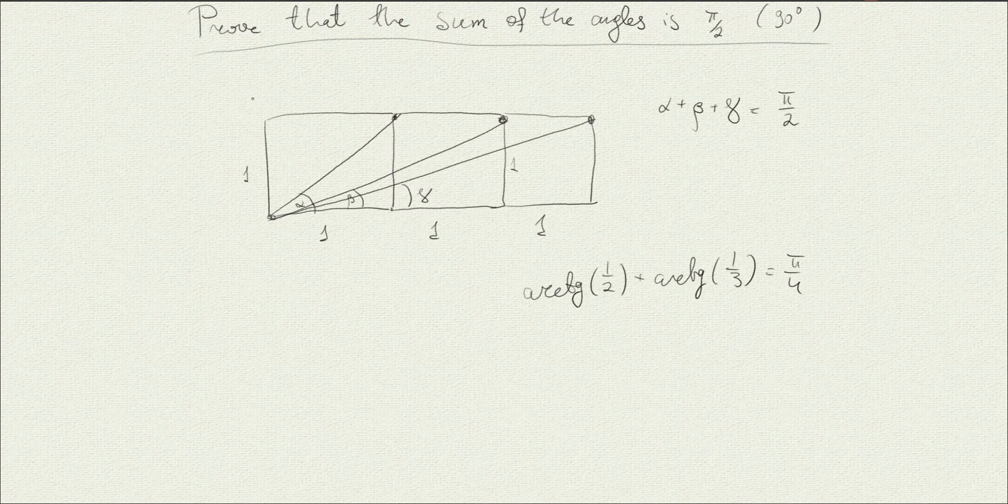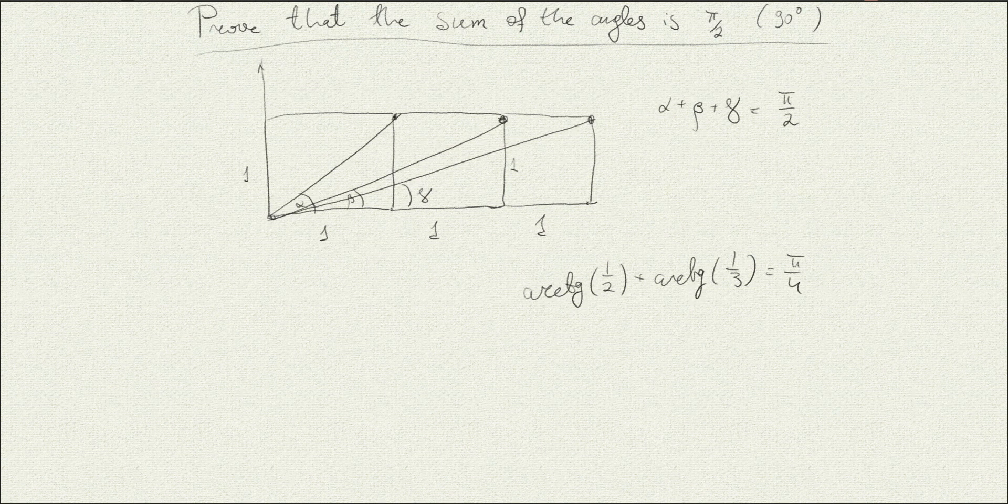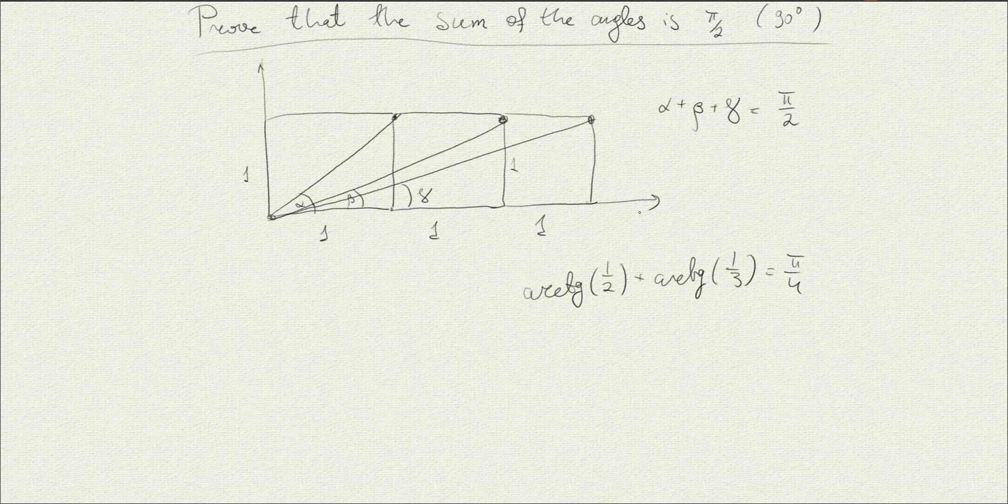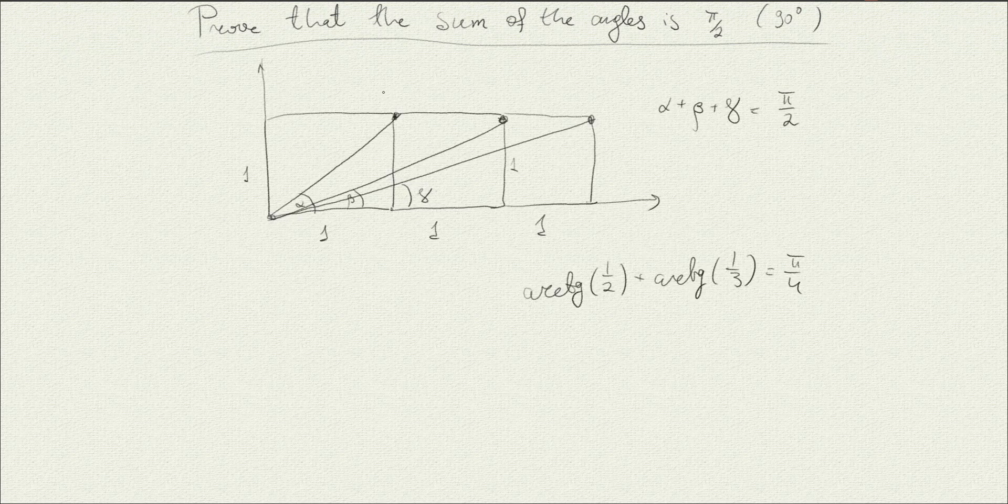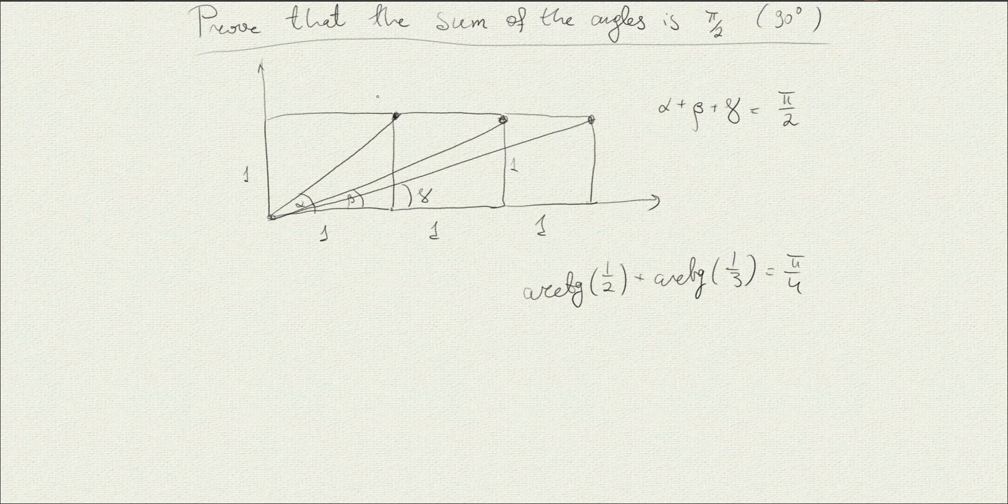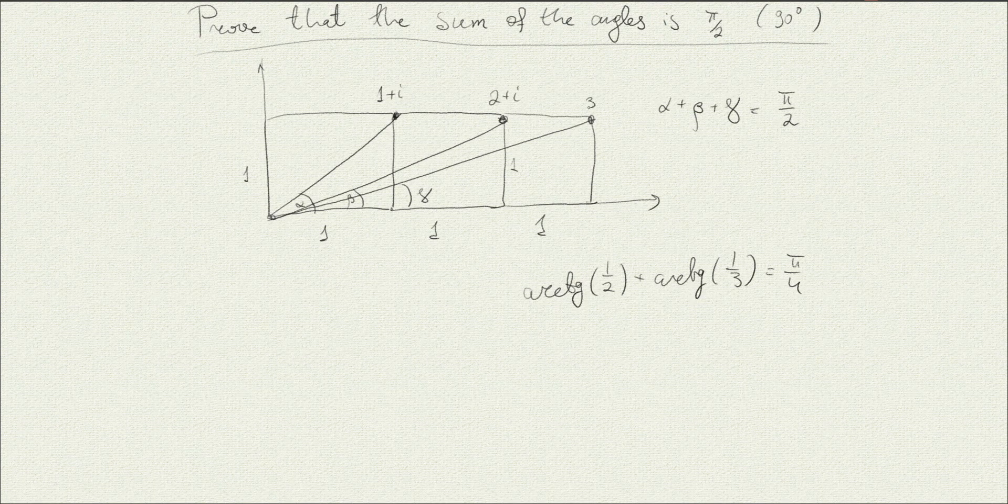So let's see how we can think about this problem. If we think of this as being embedded in the plane, and let's think of this plane as the complex plane, the reason for the complex numbers will become apparent shortly. Then the coordinate of this point is actually 1 plus i, and this point is actually 2 plus i, and this point is 3 plus i.